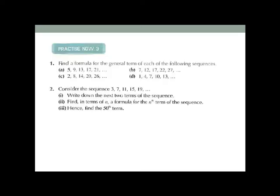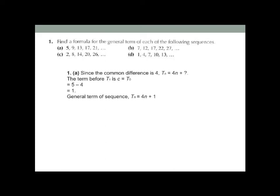Now we are doing Practice Now 3, which is on page 164. In this exercise, question one has four parts and question two has three parts. In question one, you have to find the formula for the general term. Unlike Practice Now 2 where the formula was given, here you must find it yourself. The general term lets you directly calculate any value, like the 99th term, without listing every term.